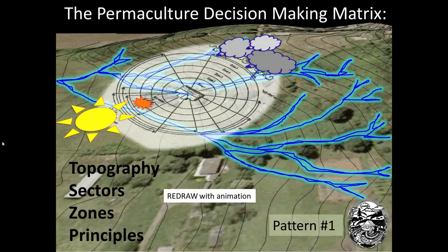We're revisiting the permaculture decision matrix for a minute to check in on where we are in the process. We just looked at how understanding topography is an important first step to creating a design. And now we're going to move into the next element of the matrix: the sectors.